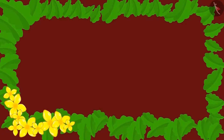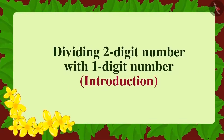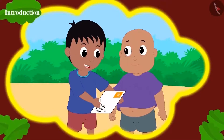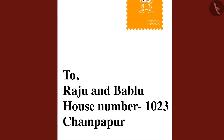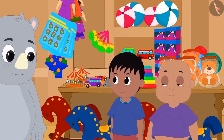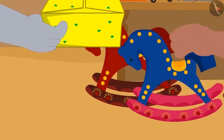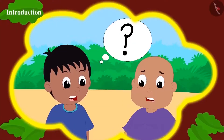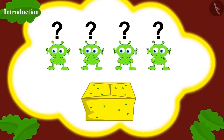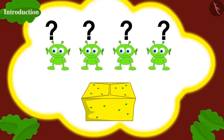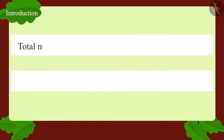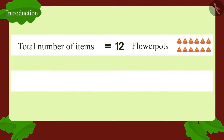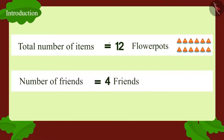In this lesson, we will learn how to divide two-digit numbers with a one-digit number. Raju and Bablu received a letter from Jeev, who is coming to celebrate Diwali with his friends. They went to Gaggu's cracker shop and bought a box of 12 flowerpots. They need to divide the flowerpots equally among Jeev's four friends — how many flowerpots will each friend get?